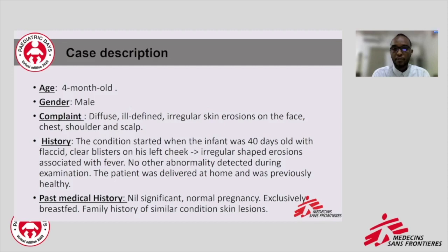We are reporting a four-month-old boy presented at our hospital by his mother with diffuse irregular skin lesions on the face, chest, shoulders, and scalp since the child was 40 days of age. The condition started when the infant was 40 days old with flaccid clear blisters on his left cheek. These ruptured to produce irregular-shaped erosions with thick crusts and pustules at the edge of the lesion. The lesion then extended to different locations, including the mucous membrane of the mouth and conjunctiva. There was no history of maternal skin disease or pregnancy complications, and the child was delivered at home and was previously healthy.